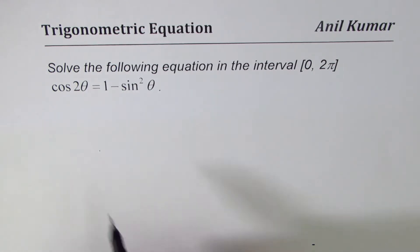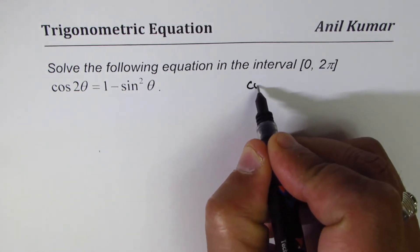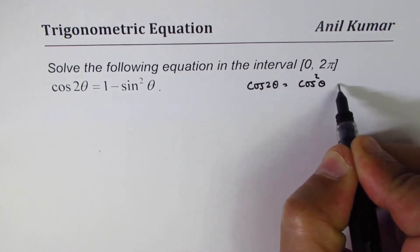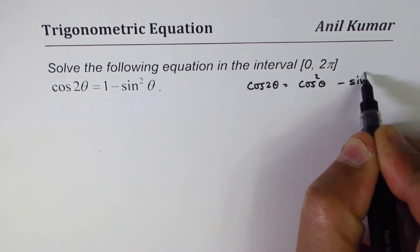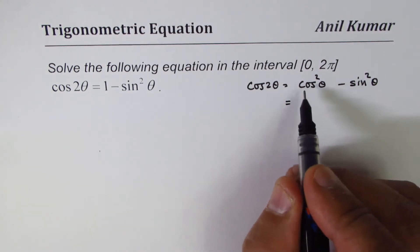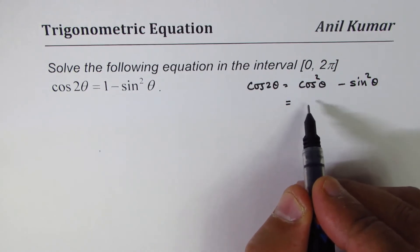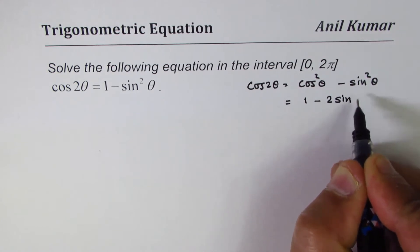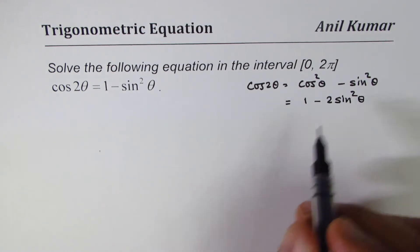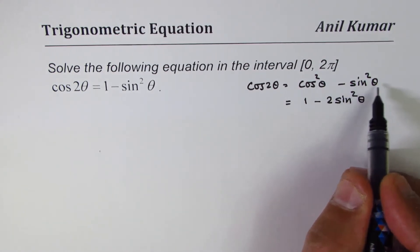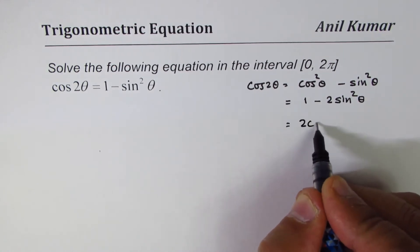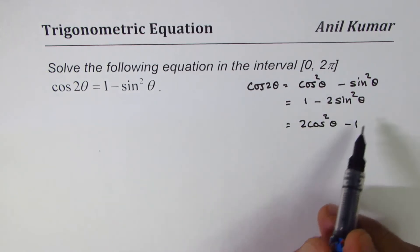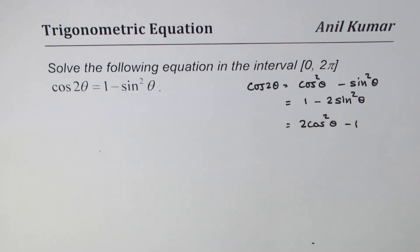Now cos(2θ) can be written as cos²θ minus sin²θ — it has three formulas. cos²θ can be written as one minus sin²θ, so it can also be written as one minus two sin²θ. If I write sin²θ as one minus cos²θ, then what I get is two cos²θ minus one. So you'll use one of these formulas to solve this equation.